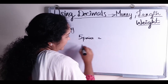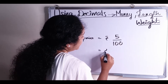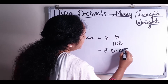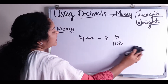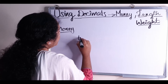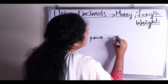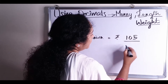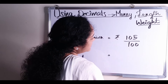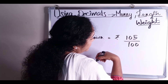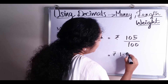Next one is 105 paise. 105 paise is equal to 105 by 100 rupees. The denominator has two zeros, so the decimal point moves to the left two places. That is rupees 1.05.